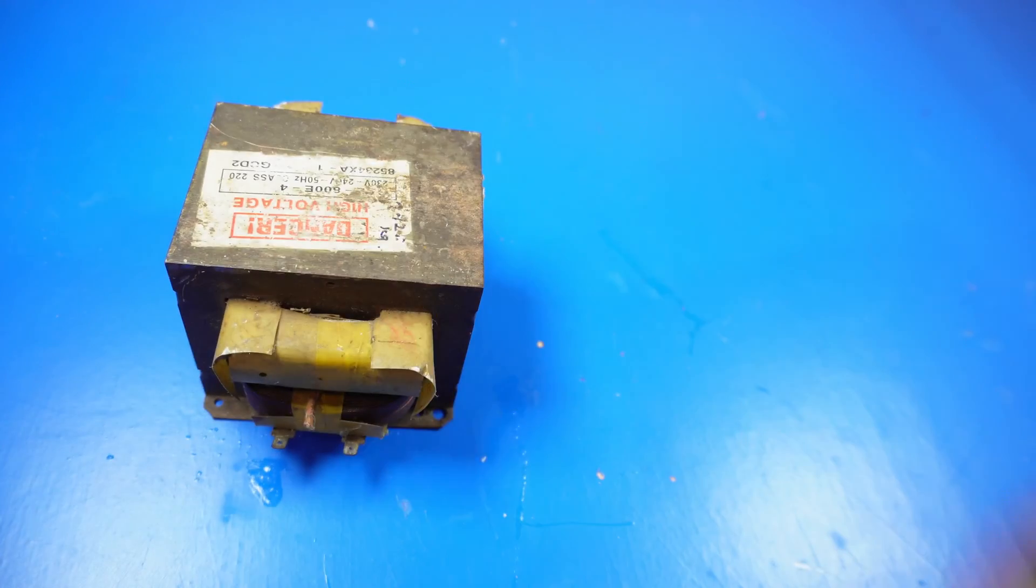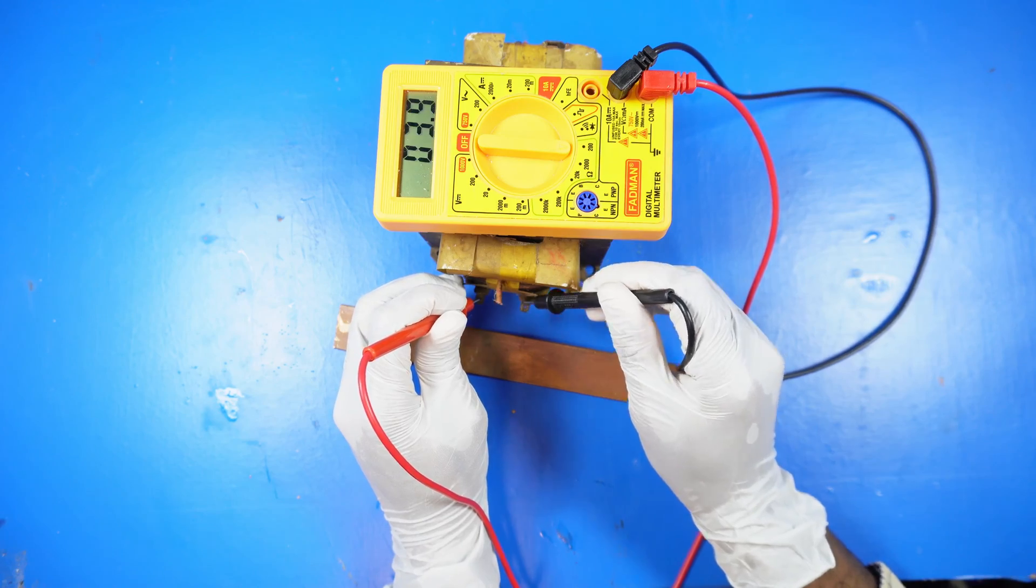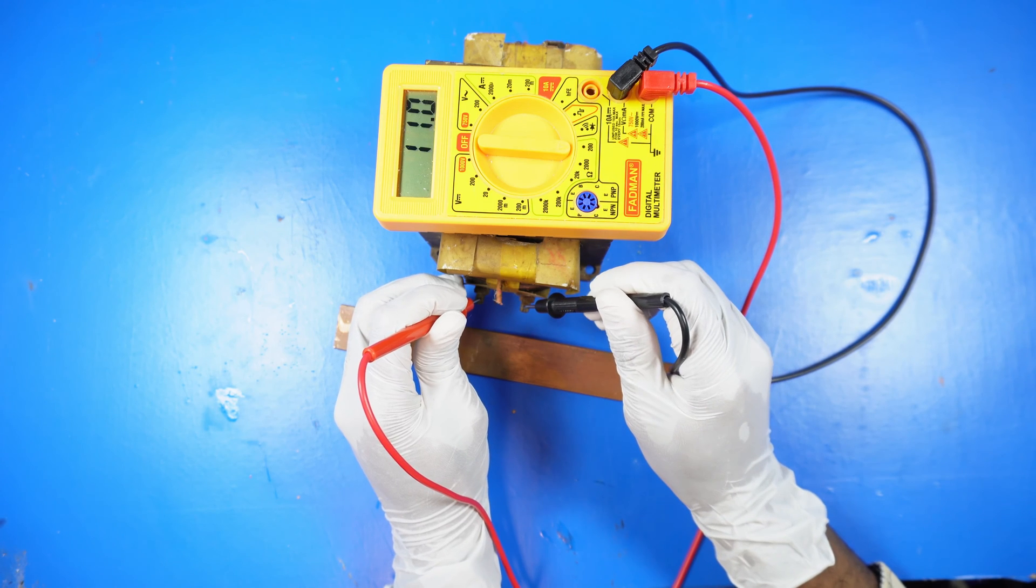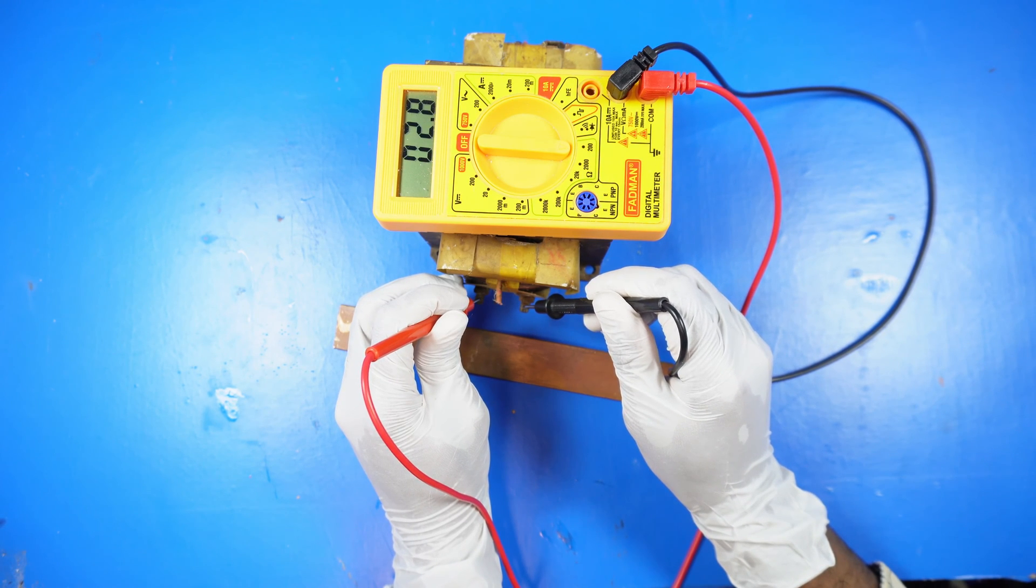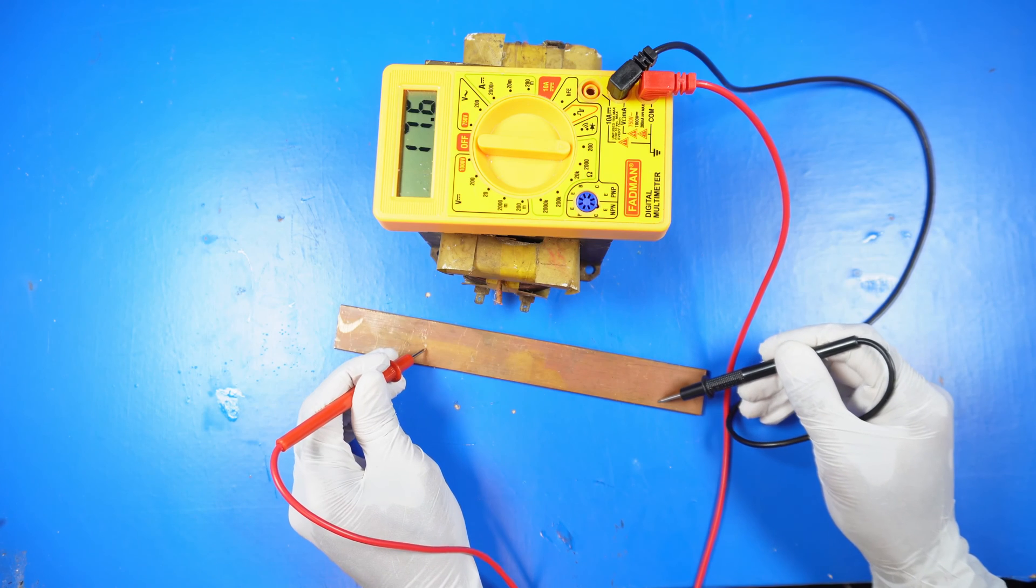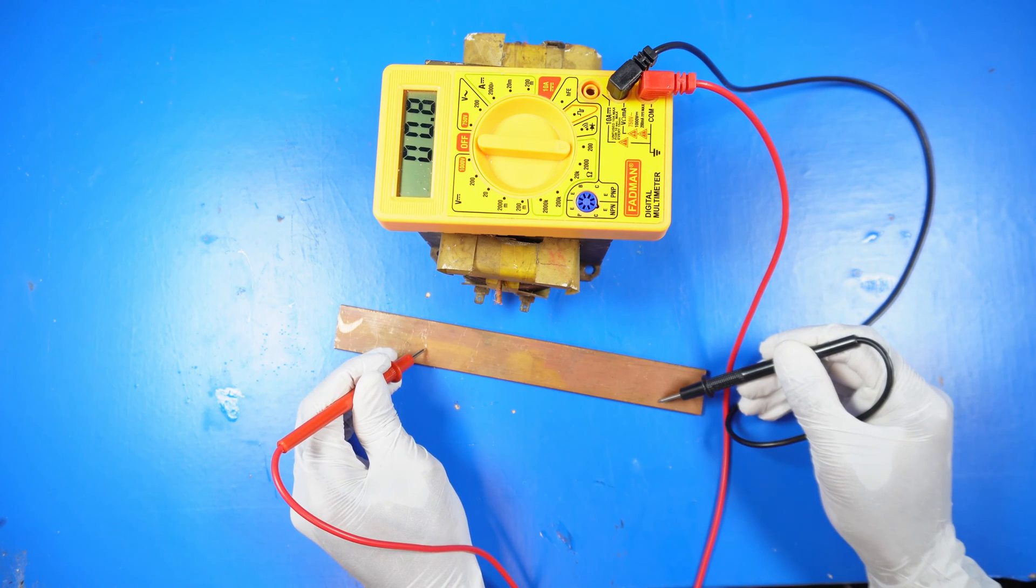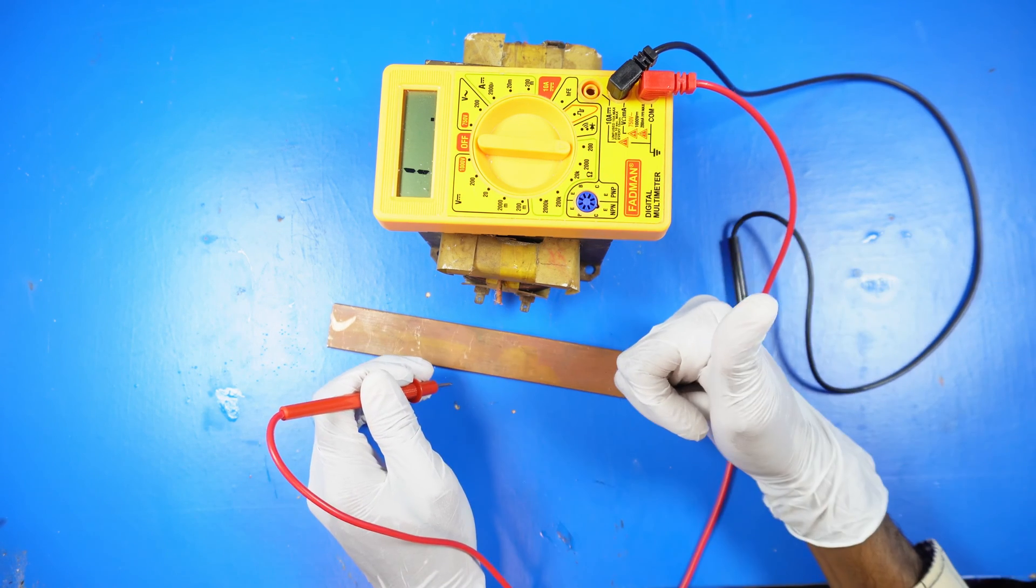For this project, you'll need a transformer from an old microwave. First, set the resistance on your multimeter to 200 ohms. The primary coil should measure around 3 to 4 ohms in resistance. This means I can use this transformer for the project.